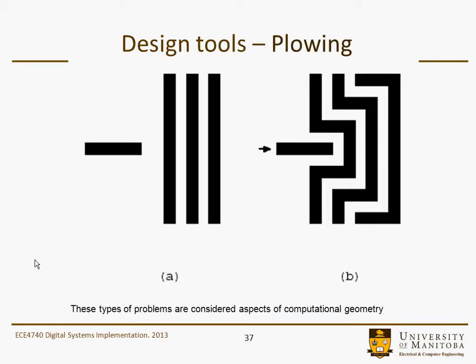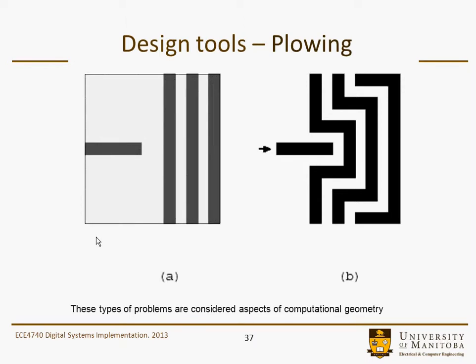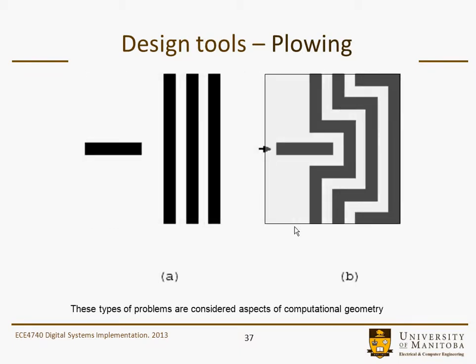Here's a simple example of plowing — a type of problem that falls under computational geometry. This shows what a layout might look like initially. If you move a metal wire and shift other elements to compensate, you end up with slightly less area. This illustrates computational geometry and the operations needed to move something without violating design rules such as spacing constraints.